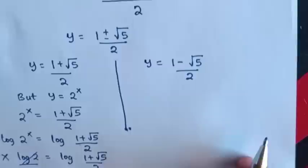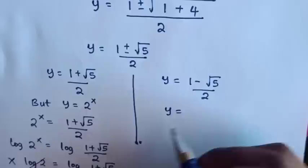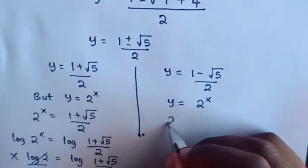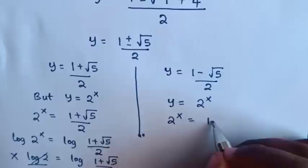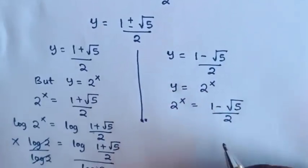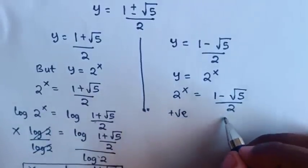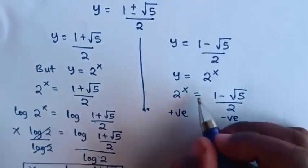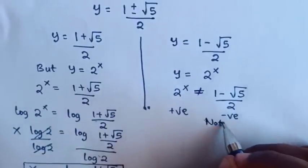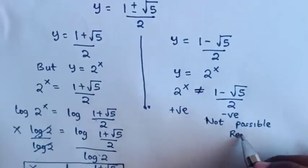For the other solution, y is equal to 2 power x, so 2 power x is equal to 1 minus square root of 5 over 2. But 2 power x is always positive, and this value is negative, so positive cannot be equal to negative. Therefore this solution is not possible and is rejected.